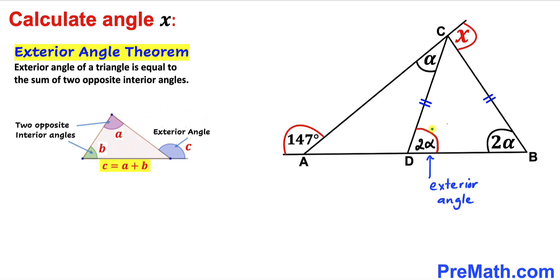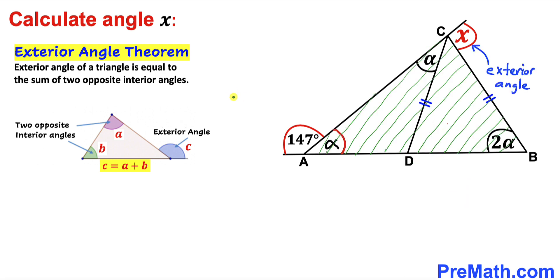So in our case, this is going to be our exterior angle, and that is going to be equal to the sum of these two opposite interior angles. We conclude that this angle is alpha, because alpha plus alpha is going to be equal to 2 alpha.